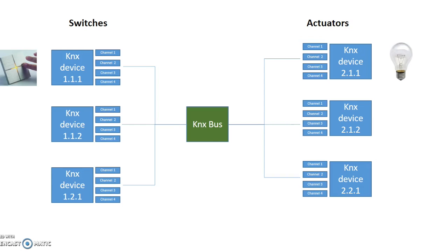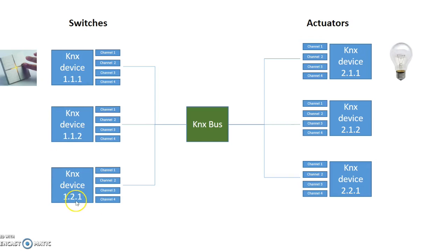In essence, the KNX system is a series of devices that are connected through a communication bus to one another. These devices are often categorized as either switches or actuators. Switches can be things like a light switch, a movement presence detector, or a temperature measuring device. Each of these devices will have their own individual address, and those addresses will be different from one another, meaning each individual device on the bus can be individually identified.